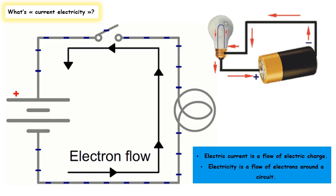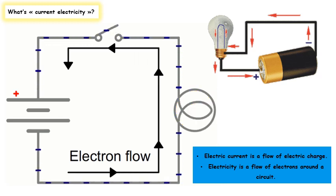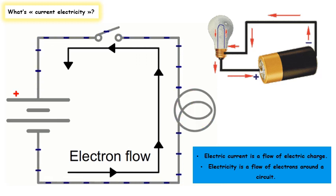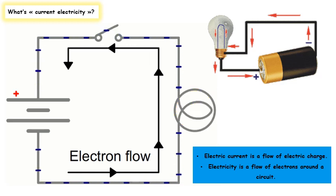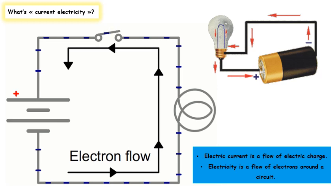A circuit is a closed path, or loop, around which an electric current flows. This circuit is usually made by linking electrical components together. Electric current is a flow of electric charge carried by electrons. Electrons flow in a circuit.